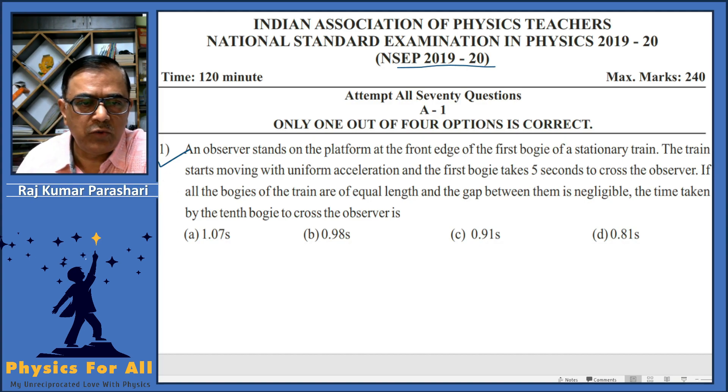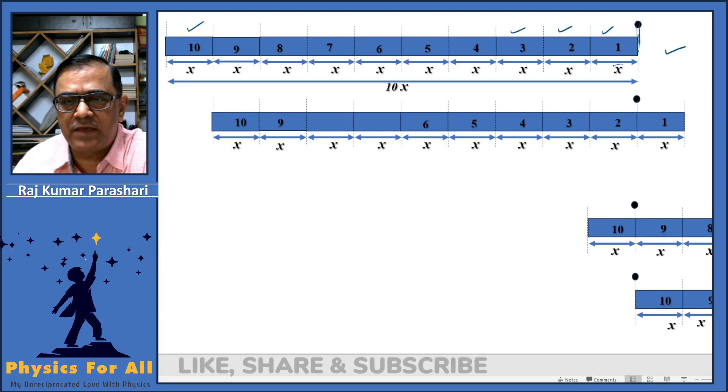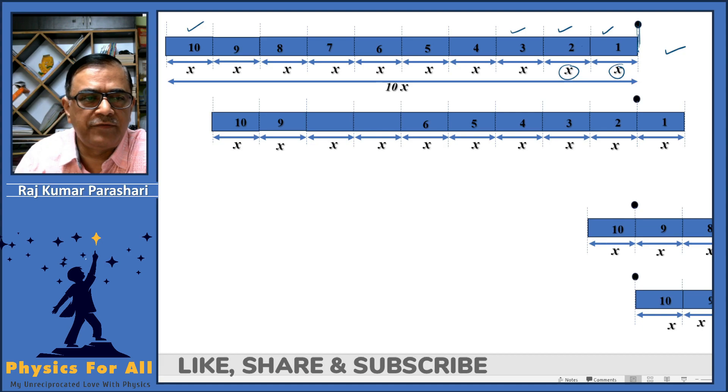Over here you have an observer standing on a platform at the front edge of the first bogey of his stationary train. As you could see here is a train and these are the different bogeys: bogey number one, bogey number two, bogey number three, and this is the tenth bogey. The observer is standing at the front edge of the train. The length of each bogey is the same, equals to X, and there is no gap between any two bogeys.